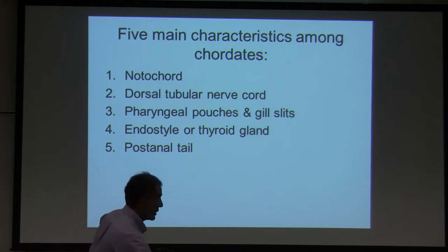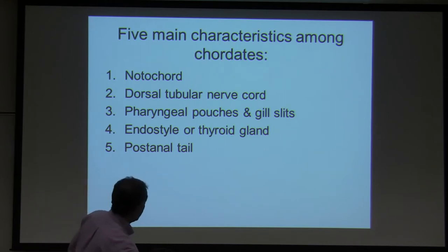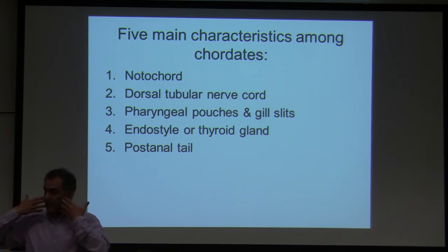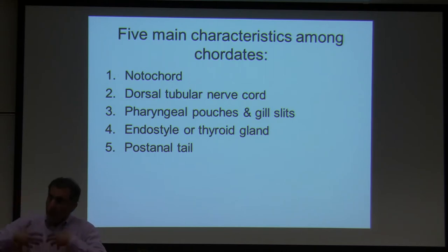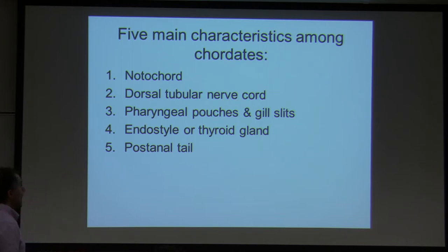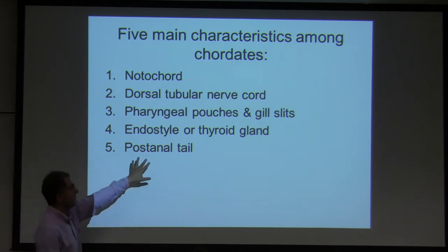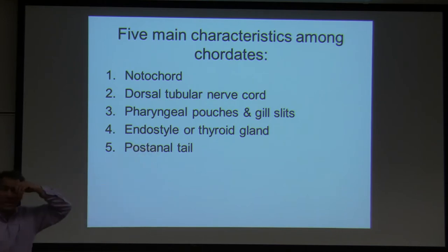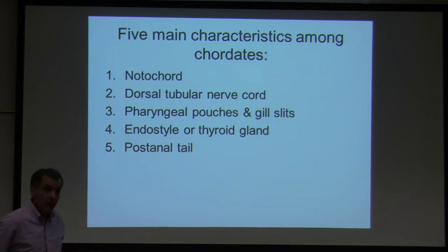The next characteristic is pharyngeal pouches and gill slits. When you were in your mother's womb, you had gill slits — you had gills — but later in development those gills became lungs. Then there is thyroid gland; some animals do not have a thyroid gland but have a structure called endostyle instead. And finally, post-anal tail — we do have a tailbone, the coccyx.